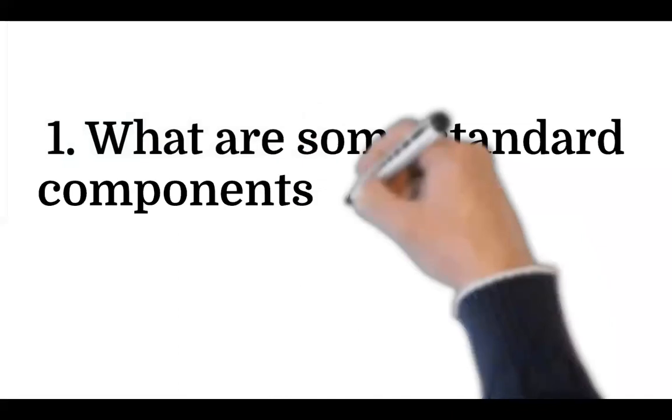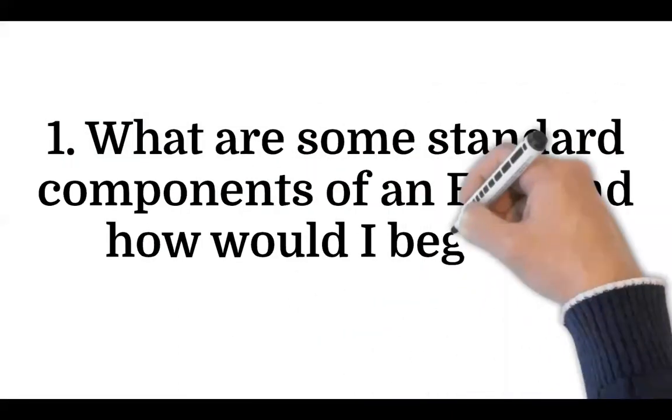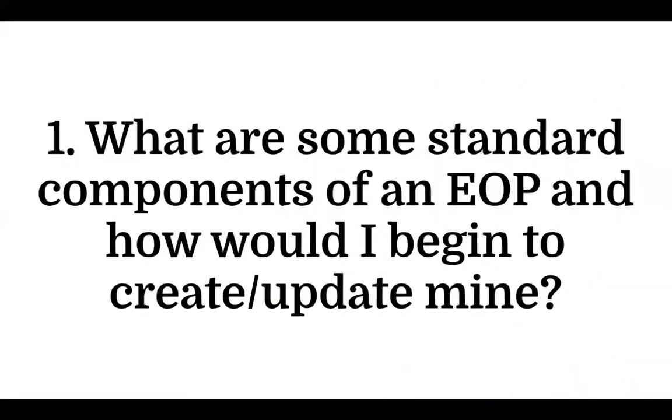What are some standard components of an EOP, and how would I begin to create or update mine? We use the RIMS, or Readiness and Emergency Management for Schools Guide to Developing High Quality Emergency Operation Plans, in pretty much everything that we do. The Guide really lays out three main points based on its structure.